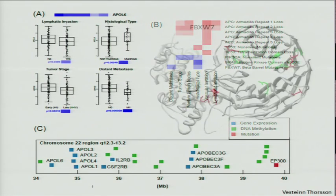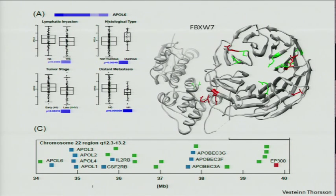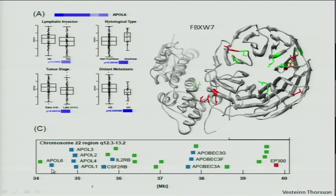FBXW7 has a beta-propeller structure, and most mutations map inside the central binding pocket, which is important in ubiquitin-mediated degradation and most likely impinges on the Wnt signaling pathway and beta-catenin degradation. In the bottom panel, you can see apolipoprotein L6, with gene expressions shown in blue, methylation features (CpG probes) in green, and a mutation in EP300 shown in red. These features associated with clinical outcomes of aggressiveness are spatially clustered — they occur in a genomic context.